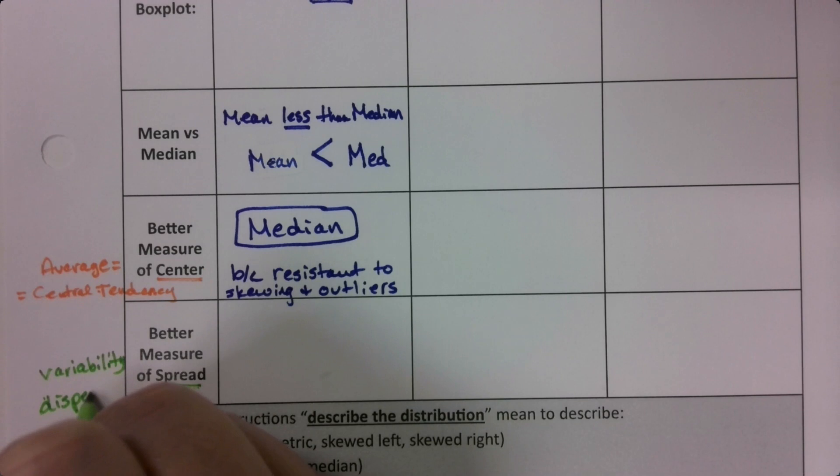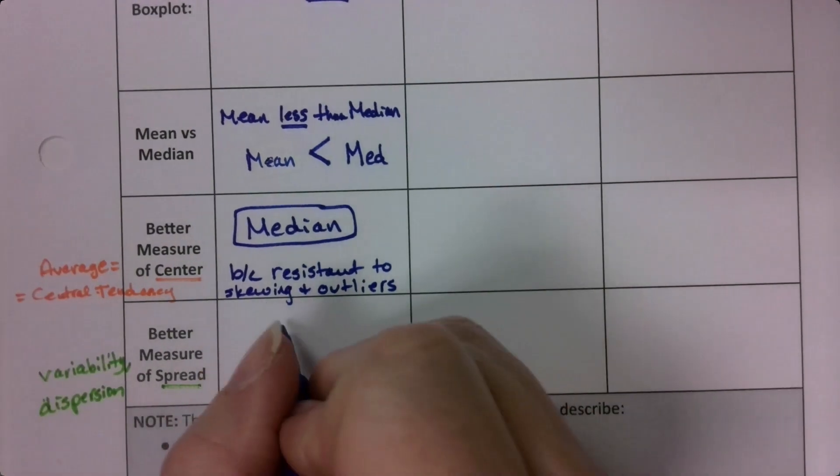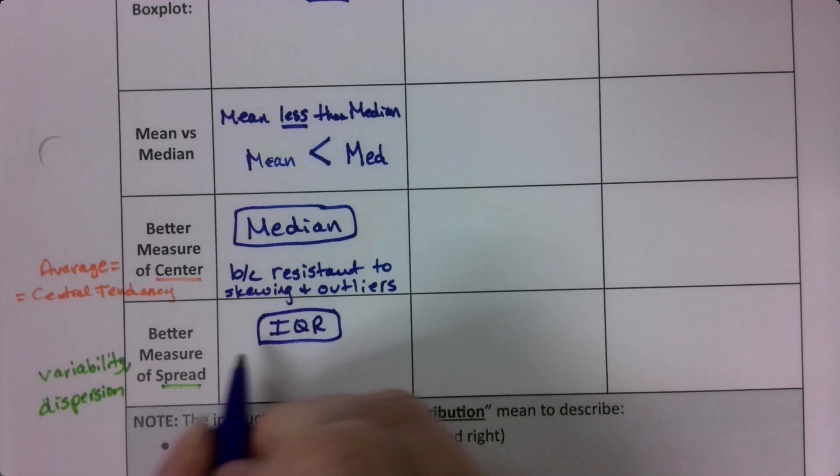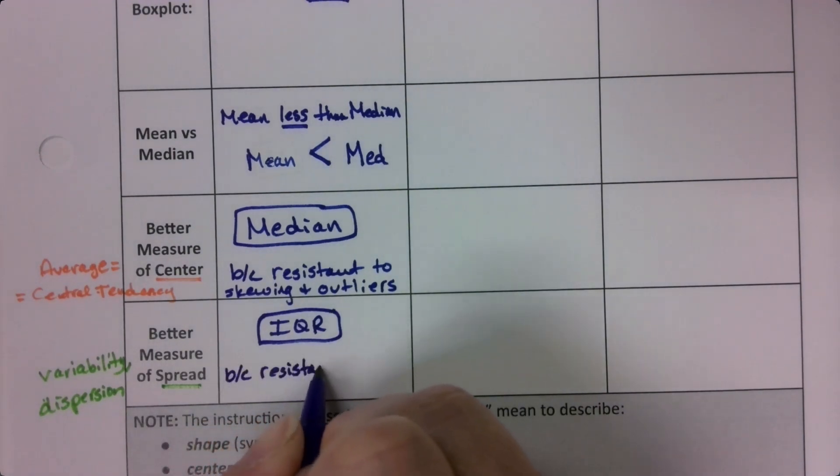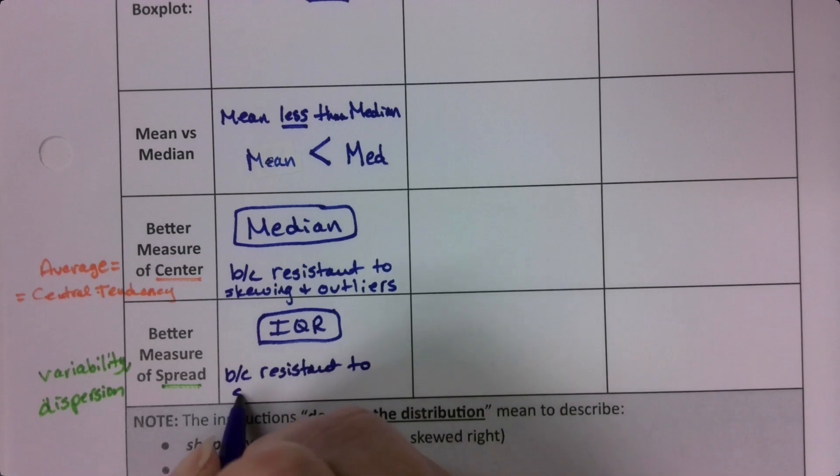Well, we just learned in this section there's a good measure of spread that's resistant to outliers and skewing. And it's IQR, the interquartile range. It's resistant to skewing and outliers, just like the median is.